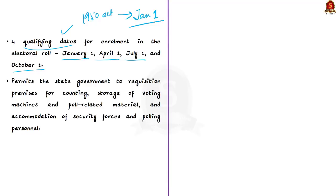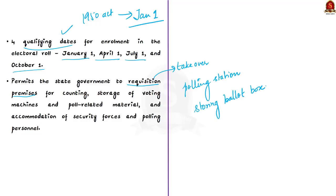The third important amendment is regarding the requisitioning of premises for election purposes. The 1951 Act permits state governments to requisition premises needed as polling stations or for storing ballot boxes after a poll. The bill expands the purposes for which such premises can be requisitioned to include counting of votes, storage of voting machines and poll-related materials, and accommodation of security forces and polling personnel.